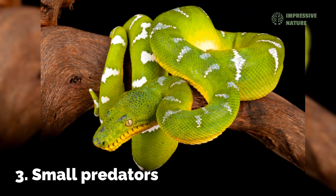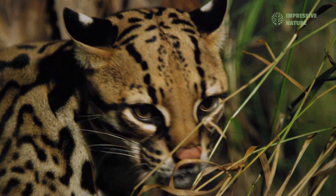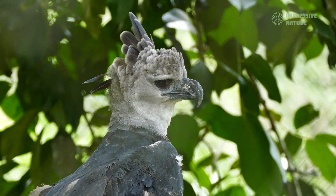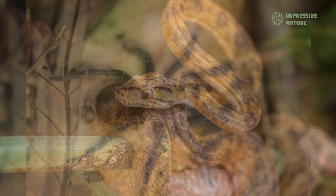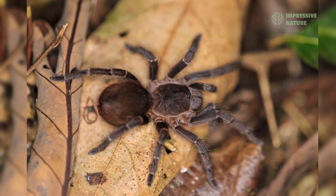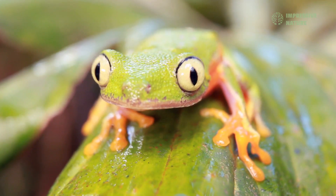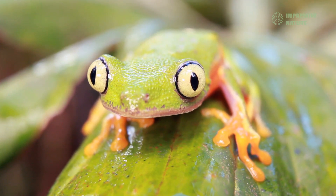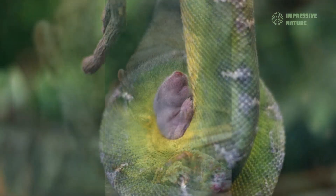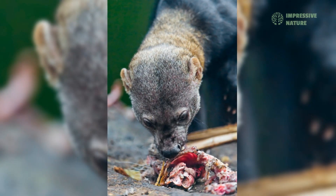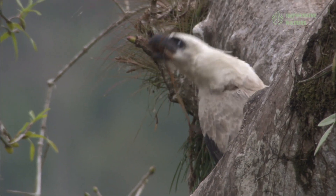3. Small predators. Small predators, including carnivorous mammals like ocelots, birds like harpy eagles, reptiles such as tree snakes, and numerous species of spiders and amphibians, form the next level of the food chain. These predators hunt insects, small mammals, birds, and reptiles, helping regulate their populations and maintain ecological balance. They prevent any one species from dominating the ecosystem, which promotes biodiversity and the health of the rainforest.